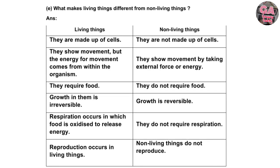E. What makes living things different from non-living things? Living things are made up of cells; non-living things are not. Living things show movement where energy comes from within the organism; non-living things move only by external force. Living things require food; non-living things do not. Growth in living things is irreversible; in non-living things growth is reversible. Respiration occurs in living things to release energy; non-living things do not respire. Reproduction occurs in living things; non-living things do not reproduce.